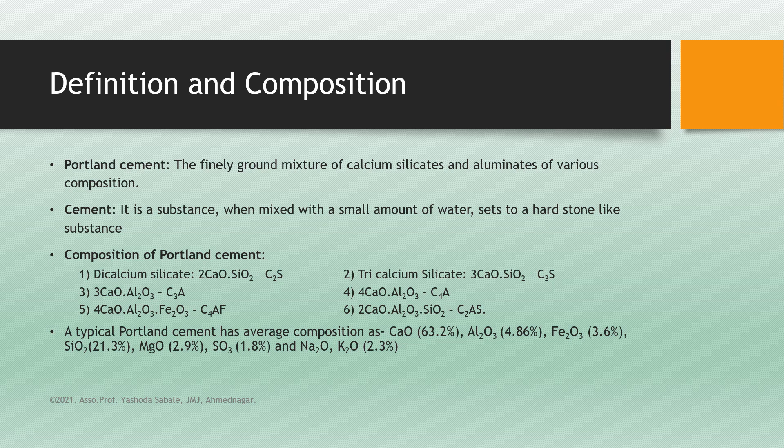What is Portland cement? The finely ground mixture of calcium silicates and aluminates of various compositions is Portland cement. It is a substance that when mixed with a small amount of water, sets to a hard stone-like substance and gets compressive strength as time goes.